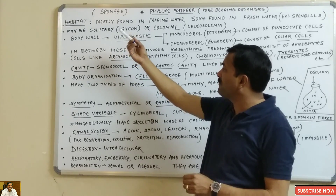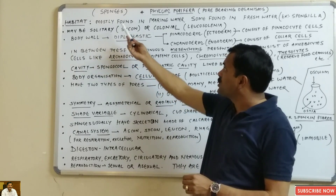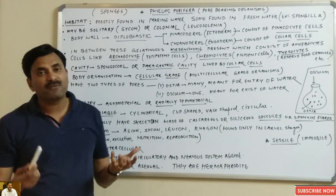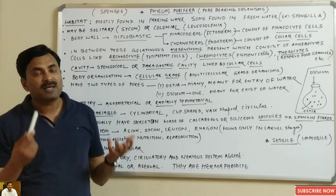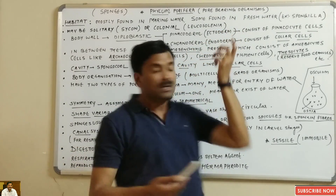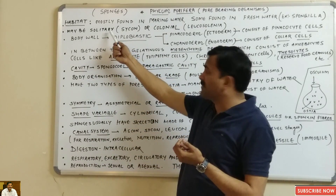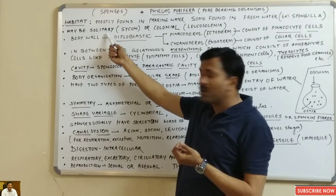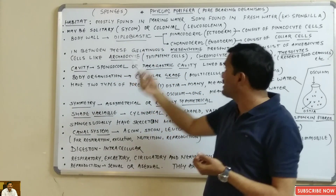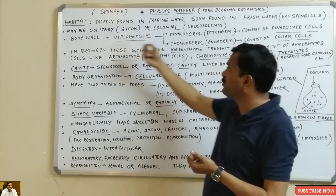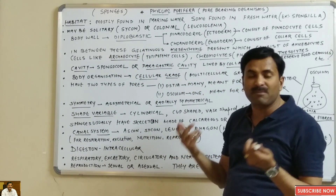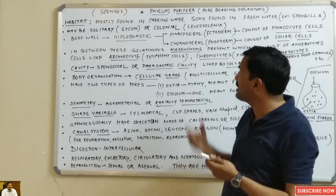Now, what is the habitat where they are living? Mostly they are found in marine water, but there are few sponges which are also found in freshwater, such as Spongilla. They may be solitary — for example, Sycon — or they may be found in a colony, such as Leucosolenia. So all together, some members are solitary and some members are colonial.